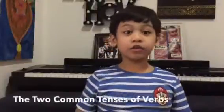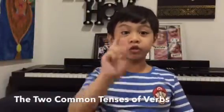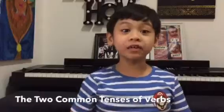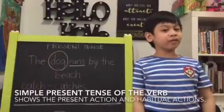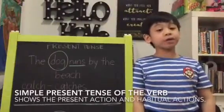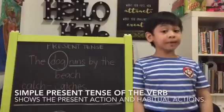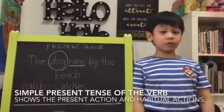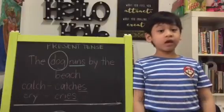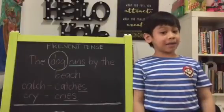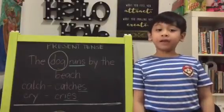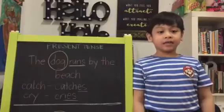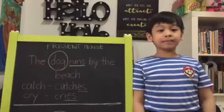Now, let us move on to the two tenses of the verb. The simple present tense of the verb shows habitual action, meaning actions that we do every day. For example, sleep, play, eat, and pray.